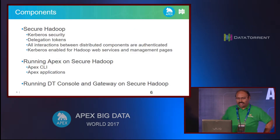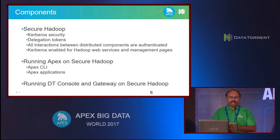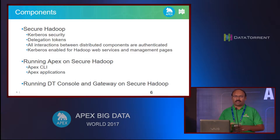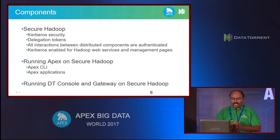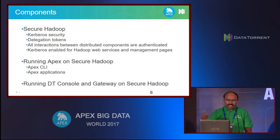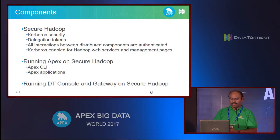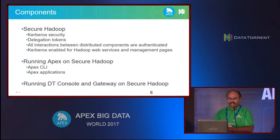So the first thing is you need to have secure Hadoop. You enable Kerberos on your Hadoop cluster. You can optionally enable SSL, but you may not because you may be in a private enterprise space. And you may or may not enable Kerberos on the Hadoop web services - the management console of Yarn, for example. How does a running application work on secure Hadoop? And how does our UI console, gateway, and monitoring tools work on secure Hadoop? Those are the two pieces we're going to cover.